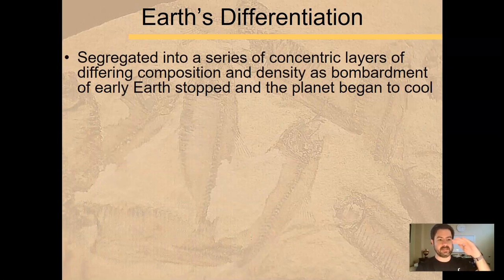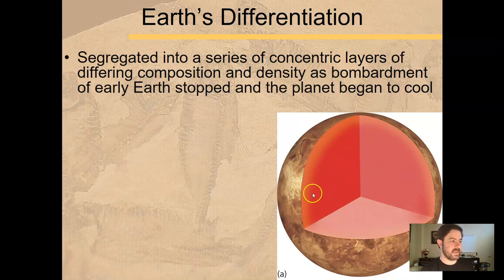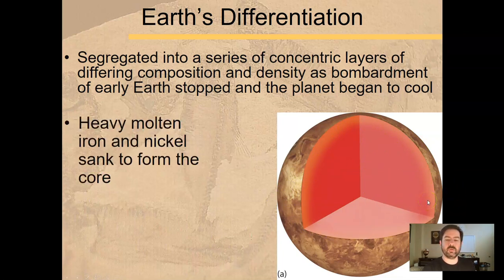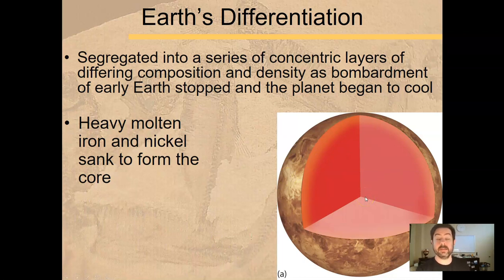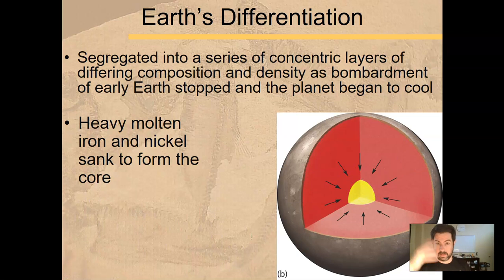What I mean by differentiation is Earth began to separate out into distinct layers. As early Earth was a molten magma ball, it was all kind of the same consistency. But as Earth began to cool down and the bombardment stopped, the uniform nature of Earth changed. The heavier material — like iron and nickel, another heavy element — began to sink toward the center of the Earth. Heavier stuff sinks.